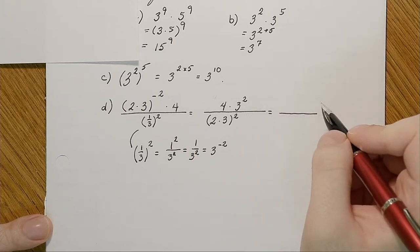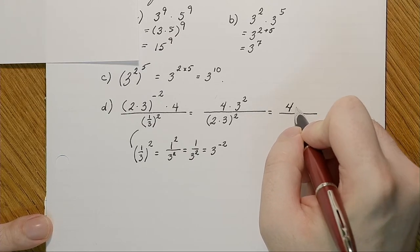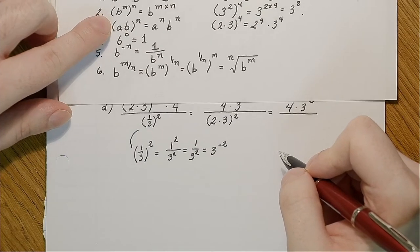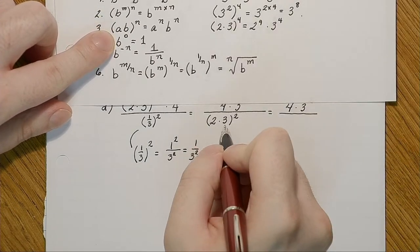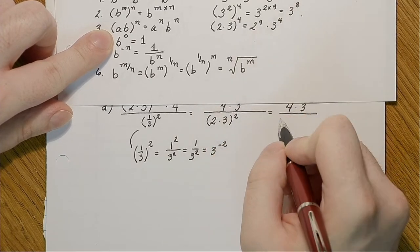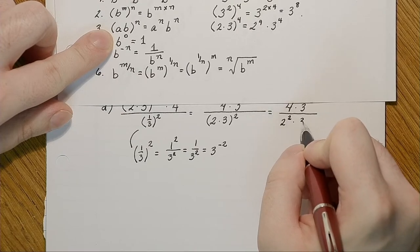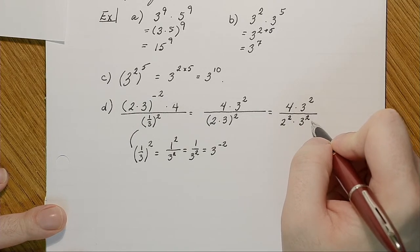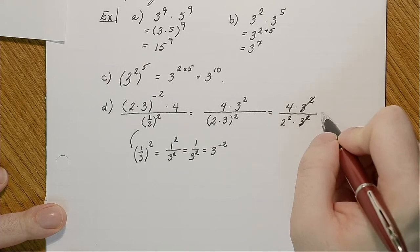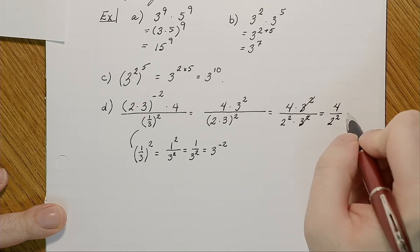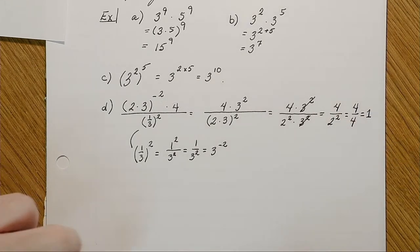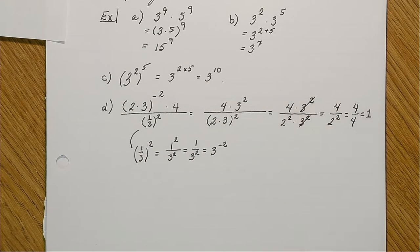Now what can I do to simplify further? I have 2 times 3 squared, so I can apply the exponent to each one: 2 squared times 3 squared. I have 3 squared in both numerator and denominator, so that simplifies to just 1. I'm left with 4 over 2 squared. 2 squared is 4, so 4 over 4 is 1. I've simplified a very complex-looking expression down to 1.